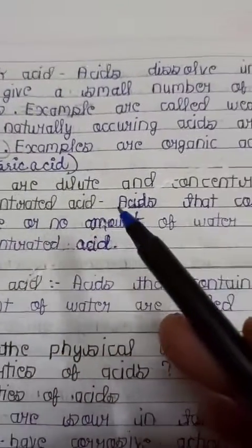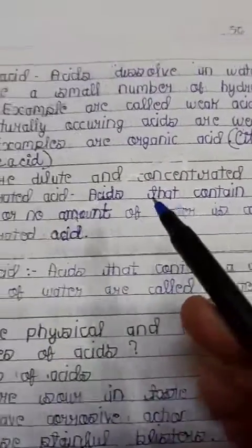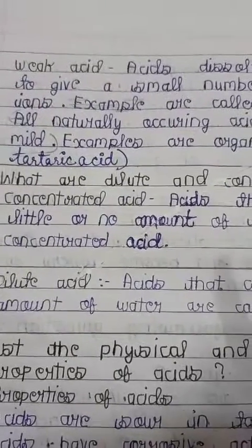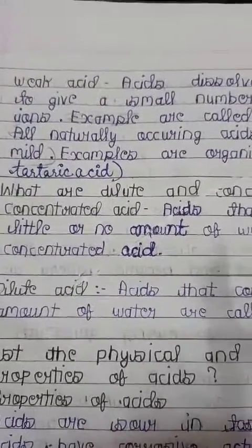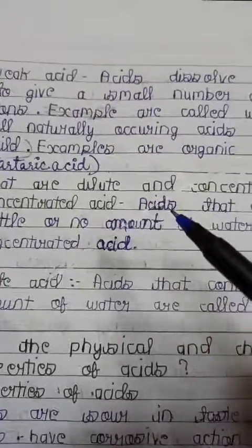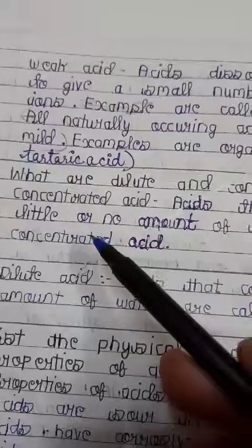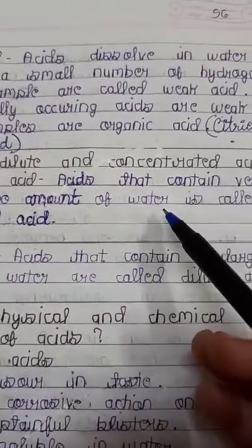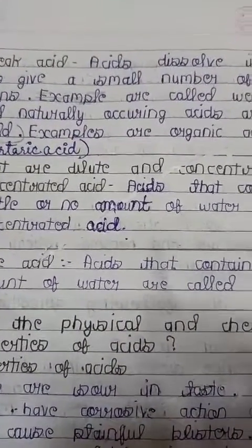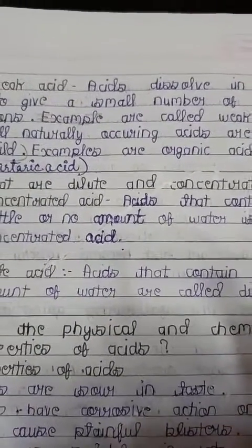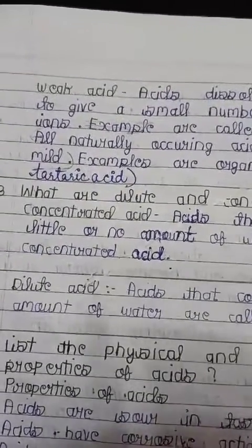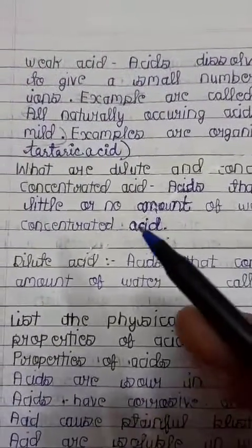Question number three is: what are dilute and concentrated acids? Acids are classified on the basis of their concentration - how much amount of acid is present. Concentrated acid is the acid that contains very little or no amount of water. When very less water or no water is present in an acid, we say that acid is a concentrated acid.